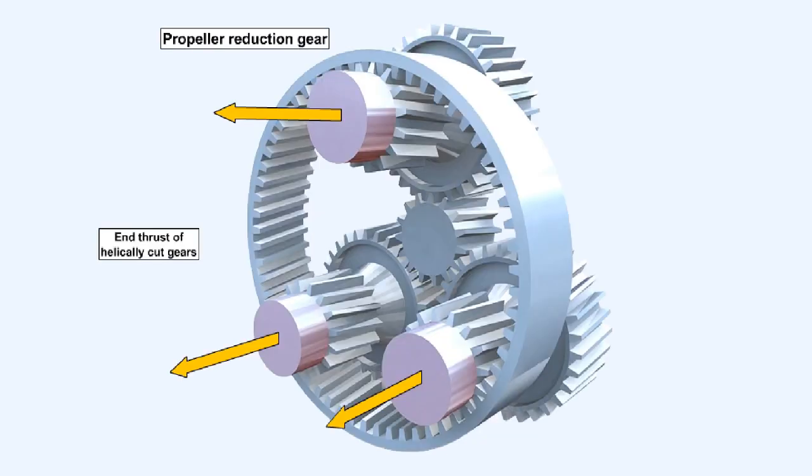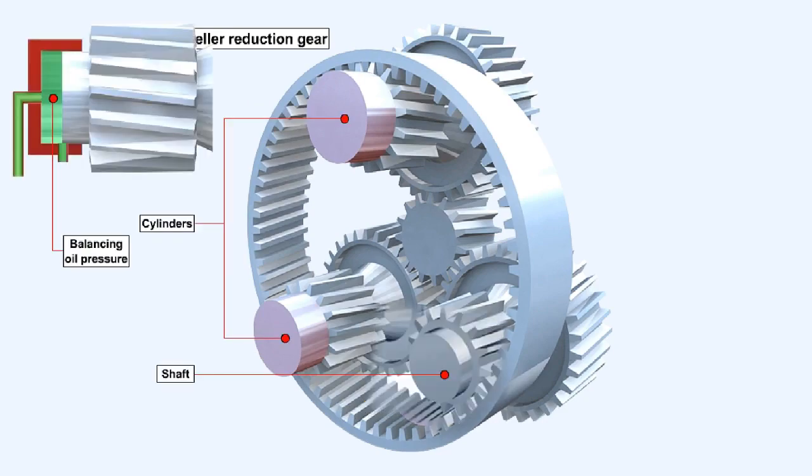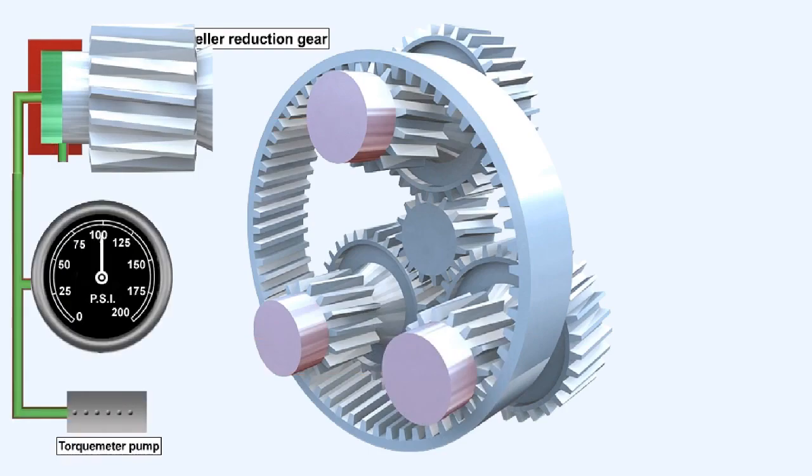Engine torque is proportional to the horsepower being produced by the engine, and this is transmitted through the propeller reduction gear. The helical gear torque meter system depends on the axial thrust which is developed when helically cut gears are used to transmit power through the propeller reduction gear. The shafts of the gears rotate within cylinders, and the axial thrust they develop is balanced by oil pressure trapped inside the cylinders. Torque meter oil pressure is transmitted to a gauge in the cockpit, calibrated in pounds per square inch.